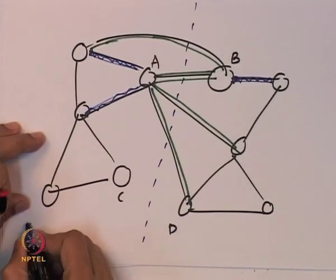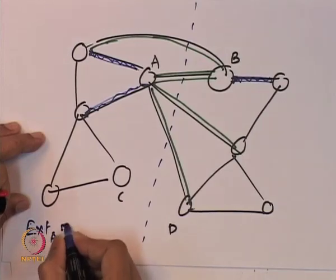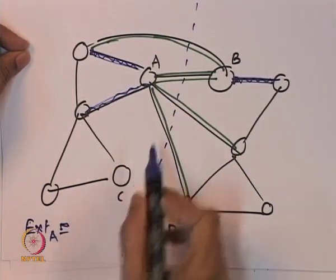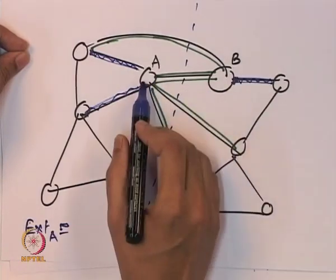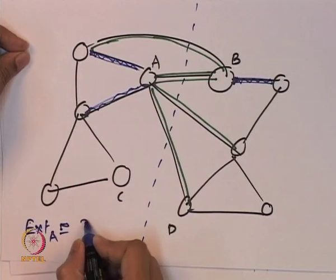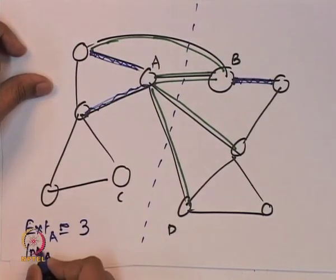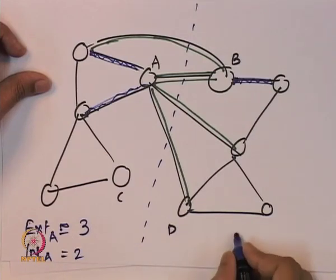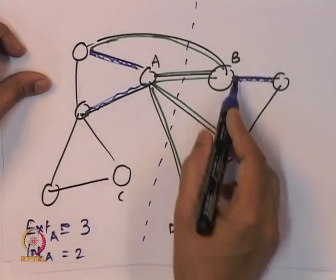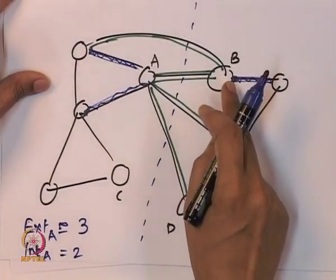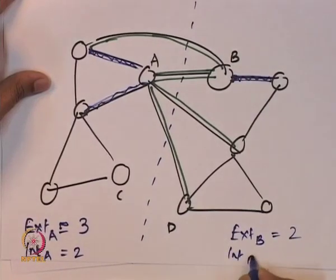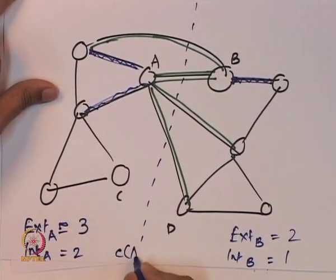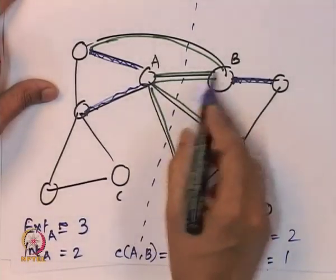We define ext(a) as the number of edges going from a to the other side — that is 3 here — and int(a) as internal connections from a to its own side — that is 2. Similarly, ext(b) is 2, int(b) is 1, and the cost c(a,b) — the number of links joining a and b — is 1.